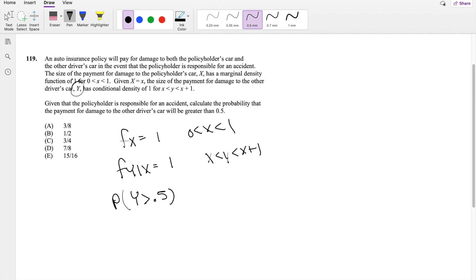Well, because x is the payment to the policyholder's car, we don't really care about the payment to the policyholder's car. So this would just be f of y greater than 0.5. But in order for us to figure this problem out, we actually need the marginal distribution of y.